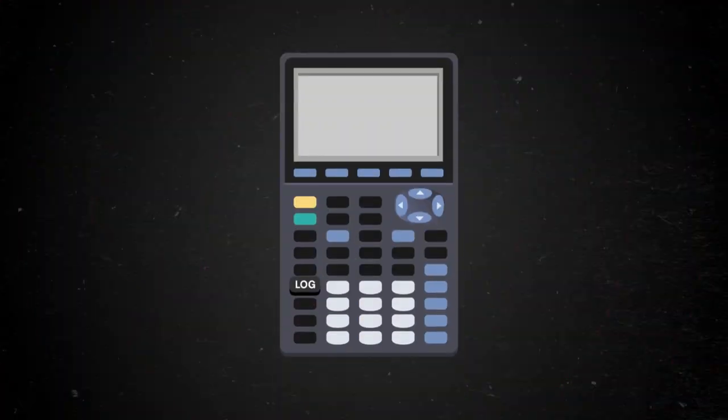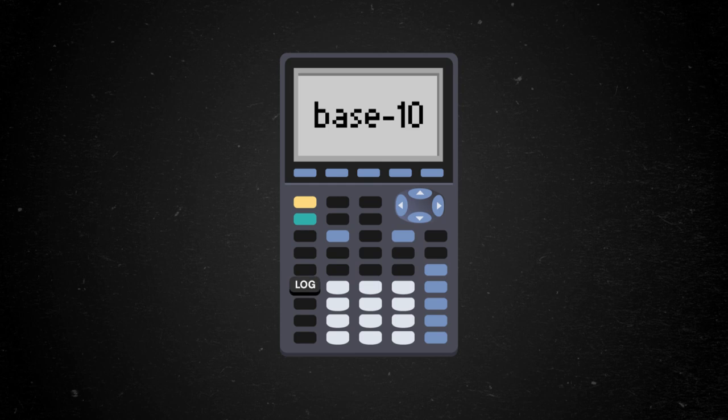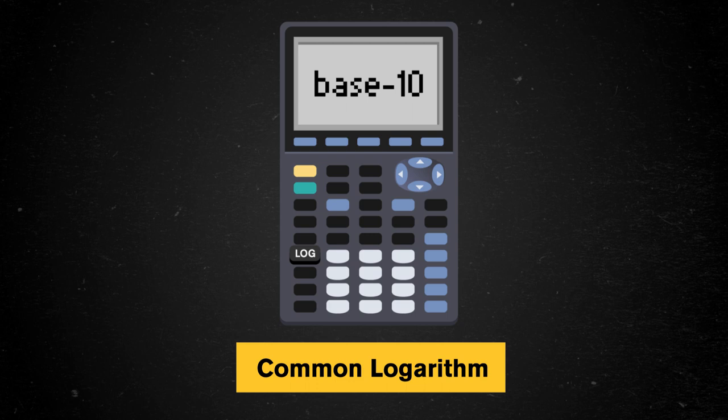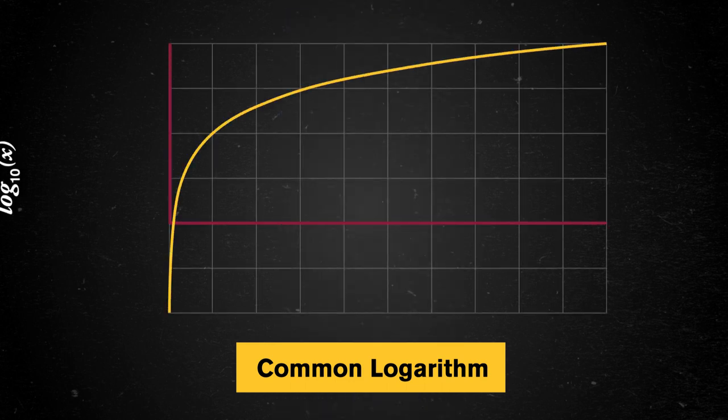The base of a logarithm can be most any number, but there are a few that we rely on more than others. For instance, the log key on your calculator is actually base 10, which is called the common logarithm, and is used most often since we like to think about powers of 10.